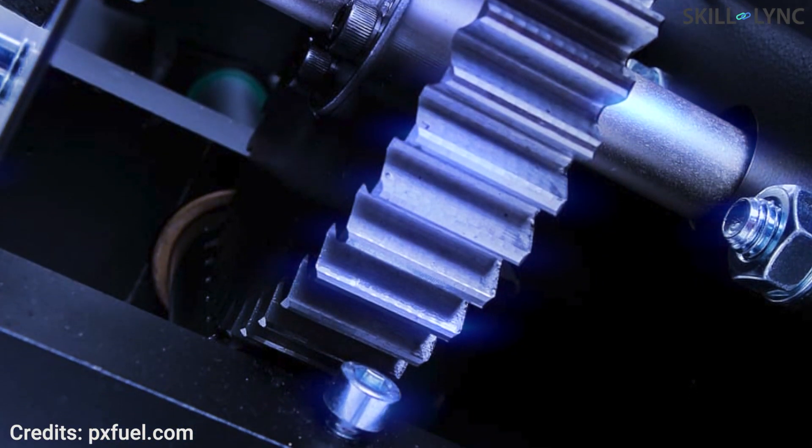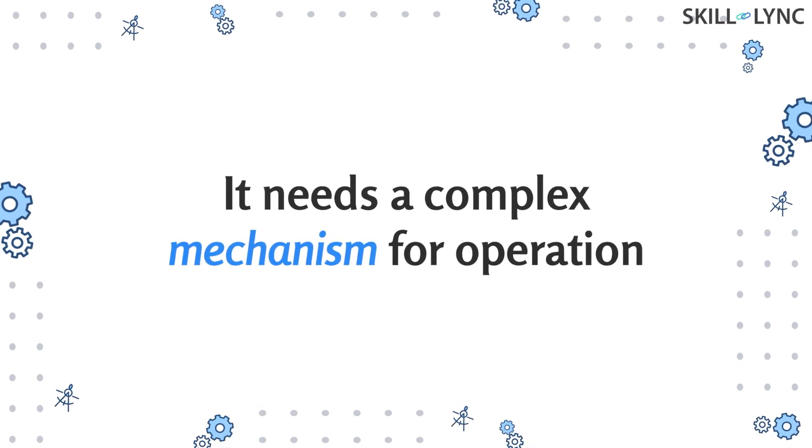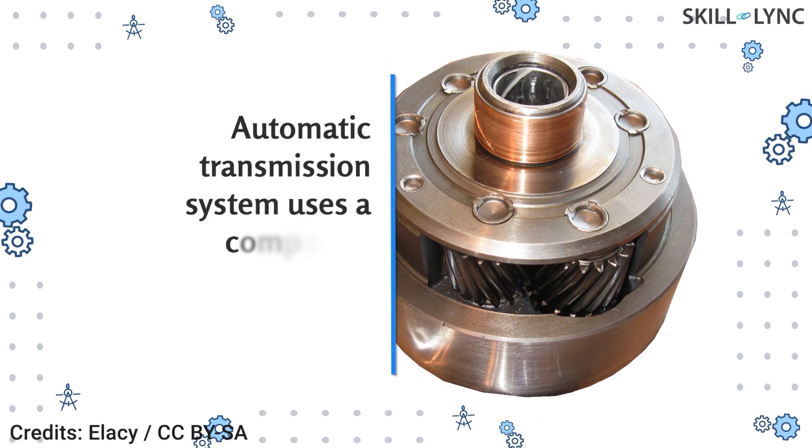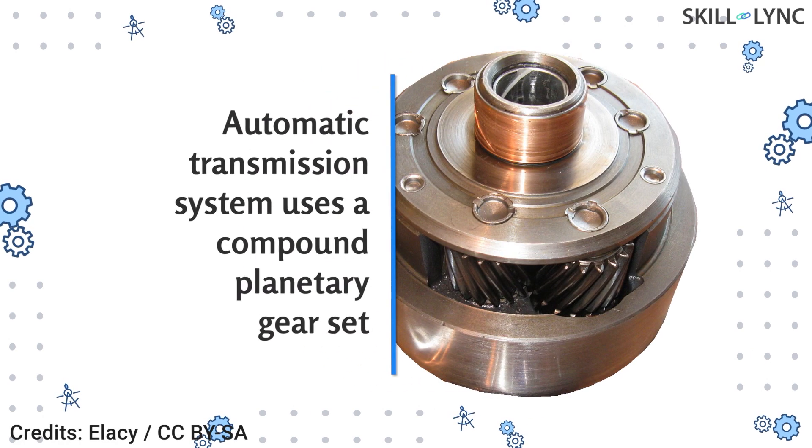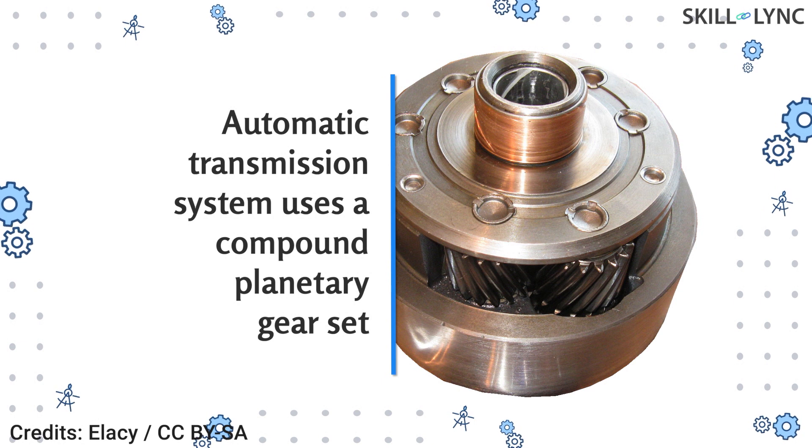This is how a planetary gear set can provide different speeds, but there is a need for changing the input to achieve speed reduction, which demands a very complex mechanism. Automatic transmission systems employ a compound planetary gear set, that is two or more planetary gear sets connected in series. This setup makes it easier to change the input and fix gears according to the requirement. We'll be discussing that in a separate video.